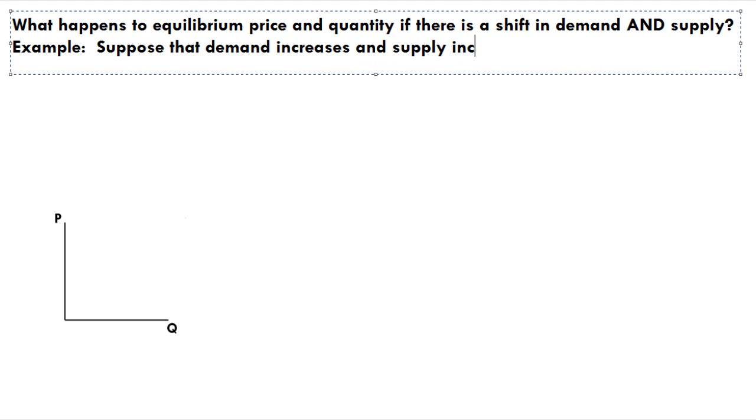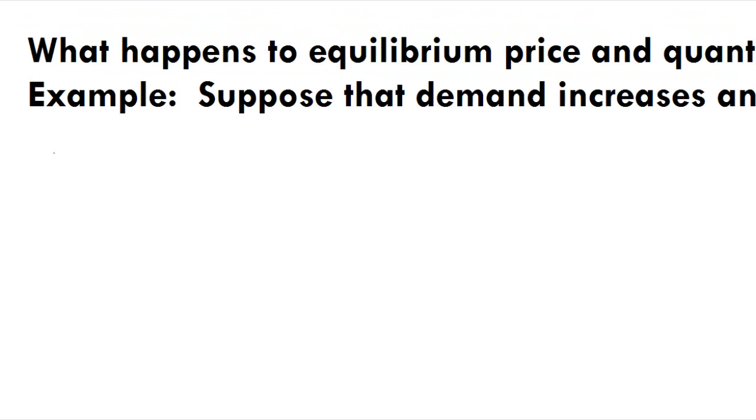In this particular case, let's assume that there is an increase in demand and an increase in supply. Now by itself, the demand increase would cause an increase in equilibrium price and an increase in equilibrium quantity.